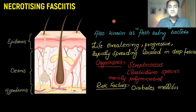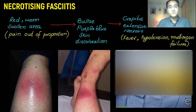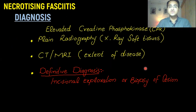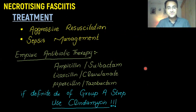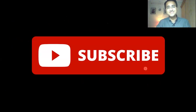In summary, necrotizing fasciitis is a life-threatening, progressive disease that destroys the tissues, caused by Streptococcus and Clostridium, with diabetes being the most important risk factor. It starts as a red, warm, swollen area, forms blisters, then crepitus and extensive necrosis with multi-organ failure. Diagnosis is made by surgical exploration of the tissue, and you can also use CT, MRI, and plain X-rays to see the gas under the skin and the extent of disease. Aggressive resuscitation, sepsis management, and empiric antibiotics are given, but surgery is the mainstay and the best initial step for both diagnosis and treatment.